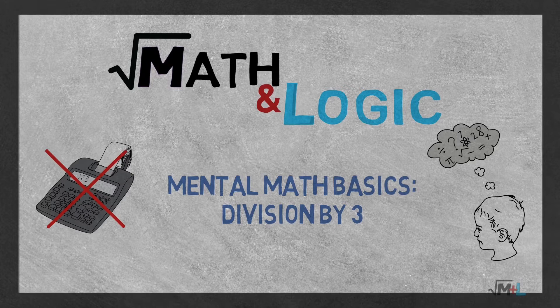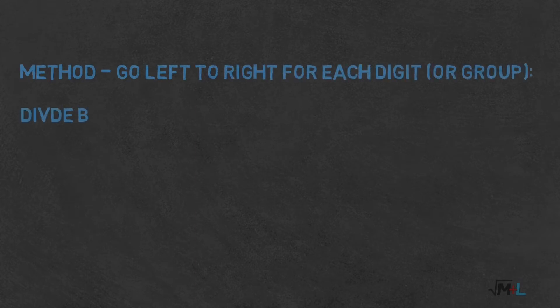It's very similar to method of dividing by 2, just more difficult but not that much. Here is the method. Go left to right taking one digit at a time or a group when it is convenient. Divide by 3 and remember write down the results.